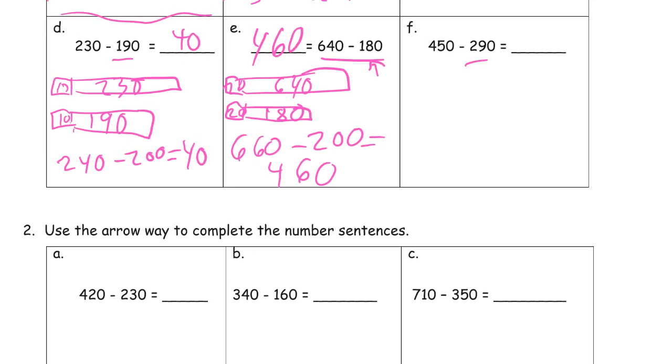And this 290, that's almost 300. So 450 and it needs 10 more. So we've got to add 10 to both. 460 minus 200 is 260.